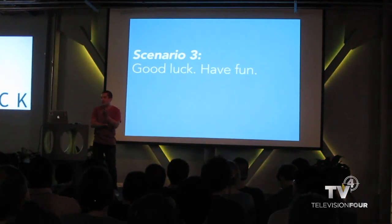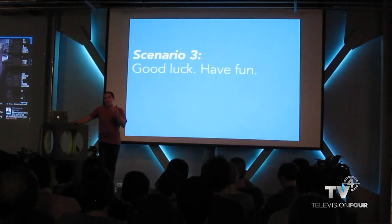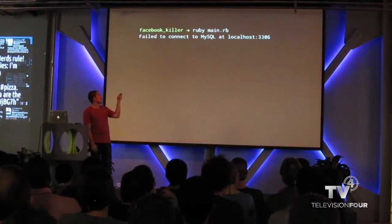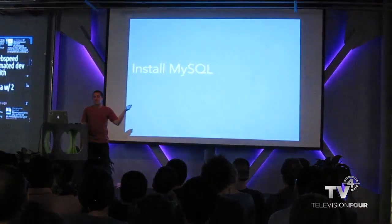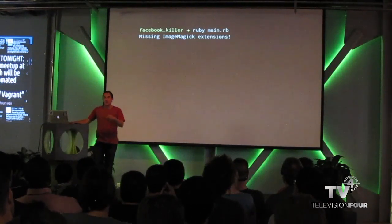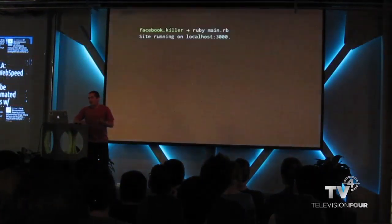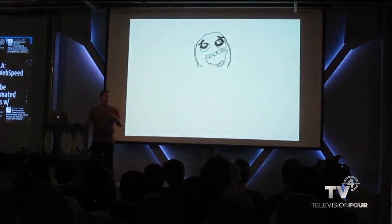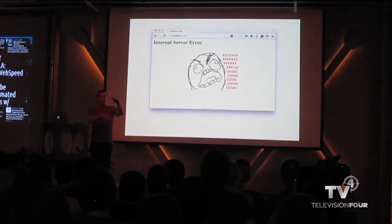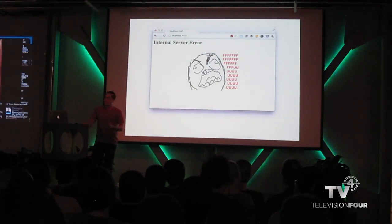Scenario three is the 'good luck, have fun' model, which is probably the most common thing that happens. You run the program, read the error — 'failed to connect to MySQL' — so you install MySQL. Run it again — 'failed to connect to Redis' — install Redis. Then missing ImageMagick extensions, and if you've ever installed ImageMagick you pretty much start to hate yourself. Then it seems to run, you load it up in your browser, internal server error — Redis is on the wrong port. You keep following stack traces.